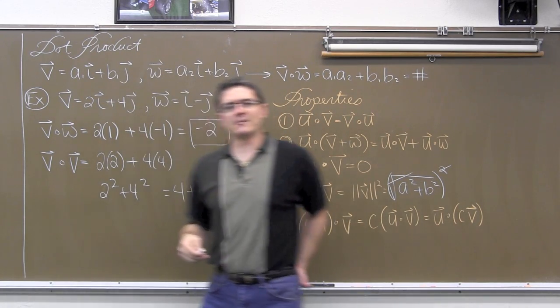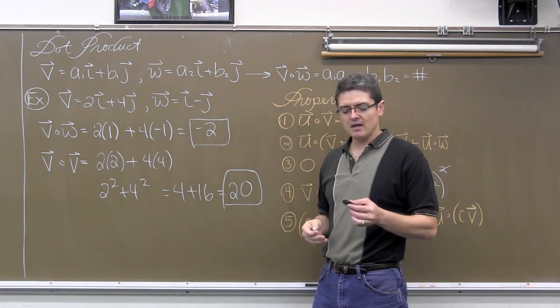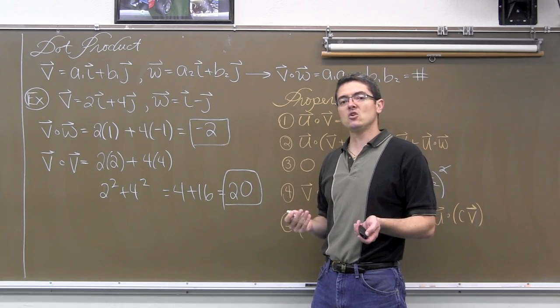So that is just a couple of quick examples of dot products. It is just a little bit of multiplication and addition. Let's see how that helps us find the angle between two vectors.